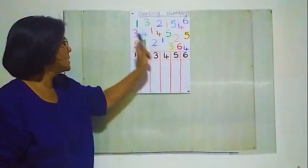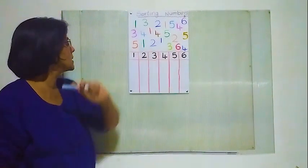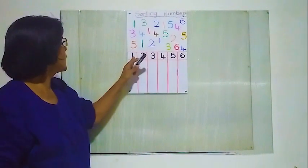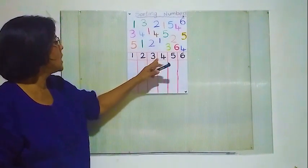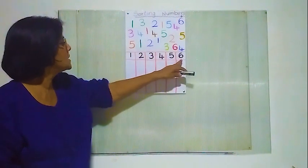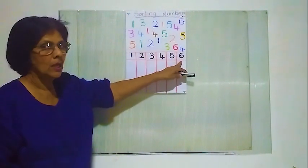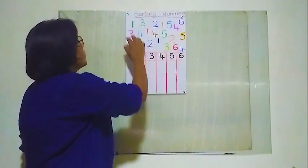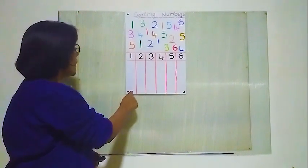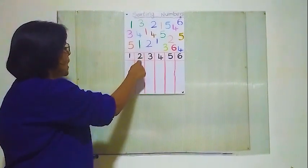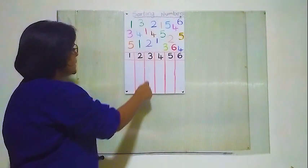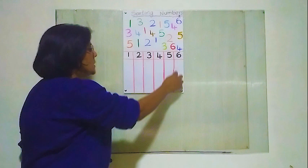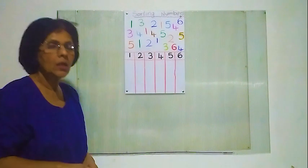There are numbers from 1 to 6, right? 1 to 6: 1, 2, 3, 4, 5, 6. Now what we must do — we have to sort out separately how many 1's, how many 2's, how many 3's, how many 4's, how many 5's, how many 6's are here.